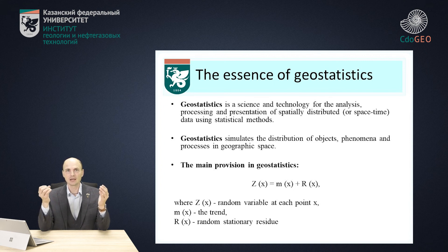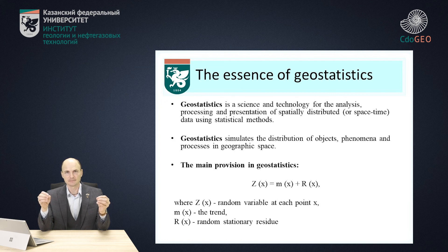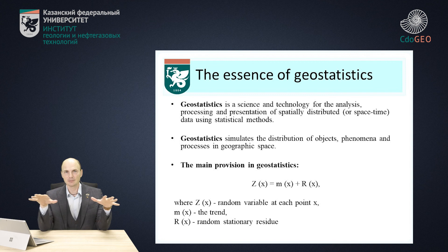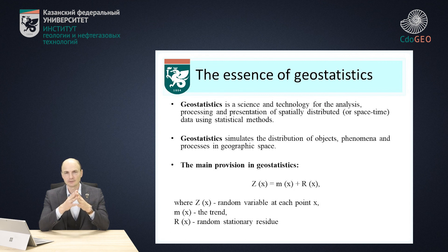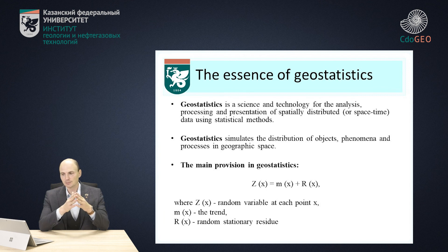For example, we have to have some wells with their coordinates and properties, such as porosity. If we have some points with different porosities, we can apply geostatistics to make a map of porosity. The main provision in geostatistics is that our random variable — the function that we are trying to find — is a stack of the trend, like the general behavior of the function, plus a random stationary residual.